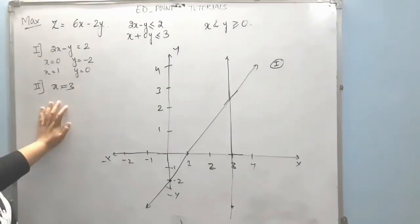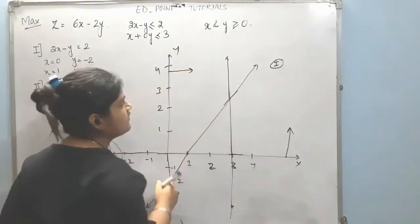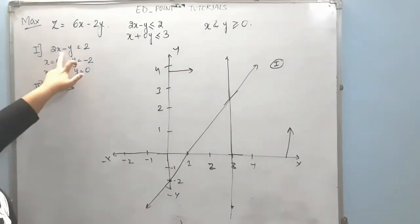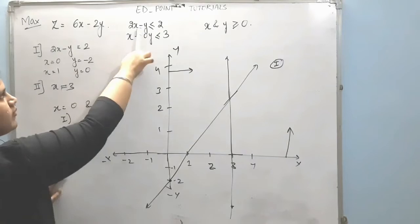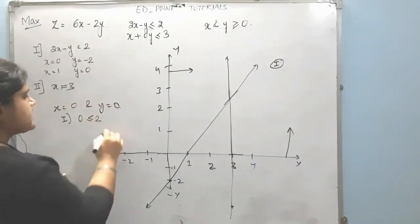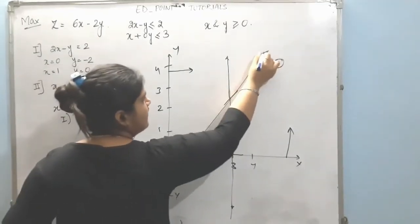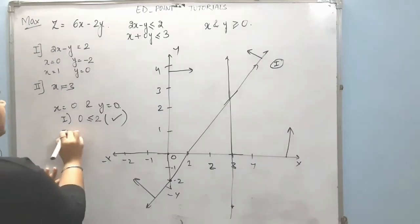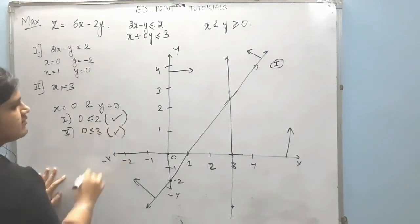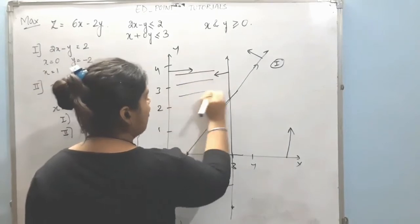Now we find the optimal region. Since x and y are both greater than or equal to 0, we are above the x-axis and to the right of the y-axis. Testing the origin for the first constraint: 0 minus 0 equals 0, which is less than or equal to 2 — this condition is satisfied, so the region containing the origin is the optimal region for that line. For the second constraint, x equals 3: testing x equals 0 gives 0 less than or equal to 3, which is also satisfied. Therefore our optimal region is identified.